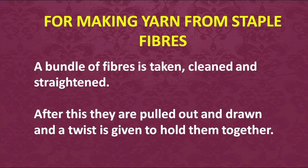To make yarn from staple fibers: when staple fibers are obtained from natural sources in a bundle, they are often not clean — they have dirt, dust, and oil on them and may be differently colored. So the first operation is to clean the bundle of fibers. Then they are straightened — laid out and combed using a special machine to make them straight.